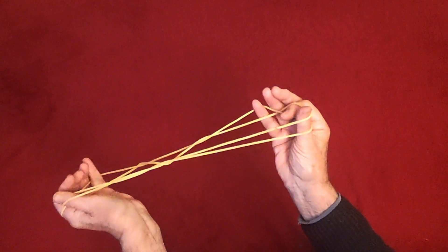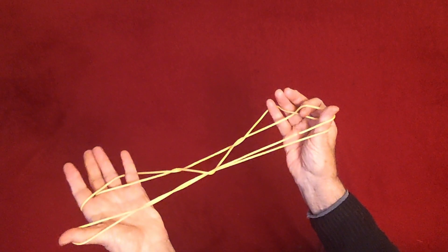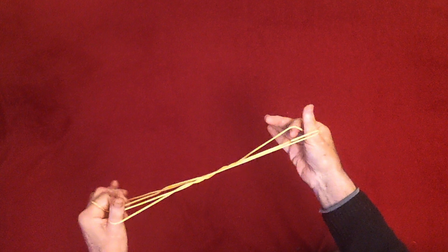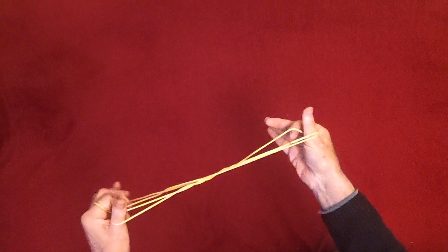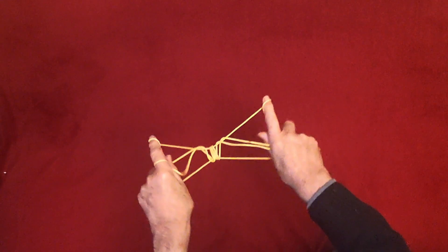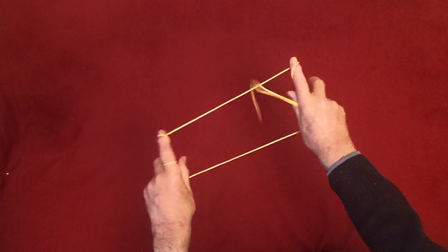And now the thumbs go under the near index strings and you lift them off releasing the thumb, releasing the indices and the indices go into little triangles in front of the little fingers and then you turn hands away and you should have the snake and you let go the thumb and away it goes.